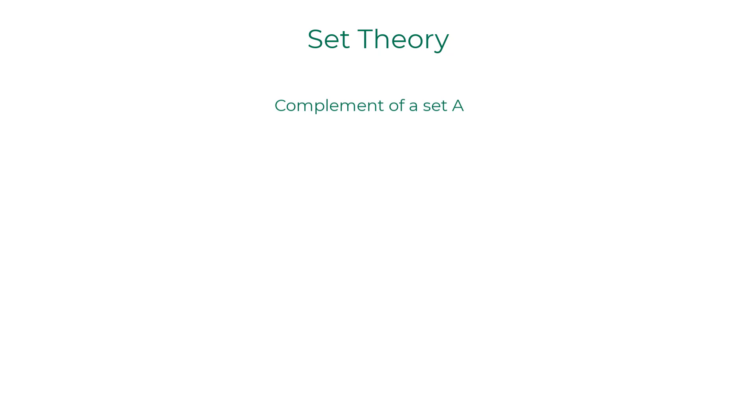The complement of a set A is a bit tricky. You first have to be aware of the set space. In this example, if we consider natural numbers as a set space, then A complement would have the following elements. Basically, A complement is the set of all elements in the set space that are not in A.